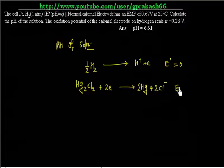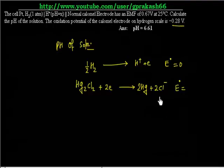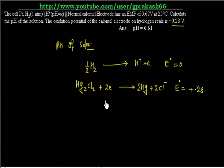E° for this cell is given. The standard oxidation potential of the calomel electrode is given. This is a reduction potential, so this becomes 0.28 V. Now, if we want to add these two cells, we have to multiply the first equation by 2. Let us write equation 1 multiplied by 2.